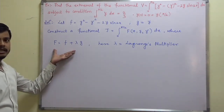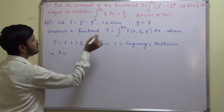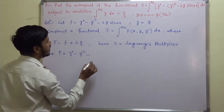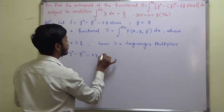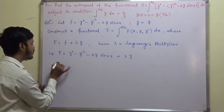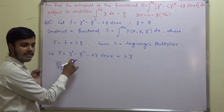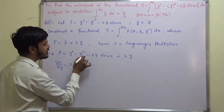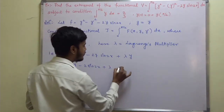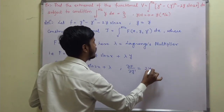Once you get this, just try to find out its derivatives. F is equal to y squared minus y-dash squared minus 2y sin(2x) plus λ times y. Now, del F by del y equals 2y minus 2 sin(2x) plus λ, and del F by del y-dash equals 2y-dash.